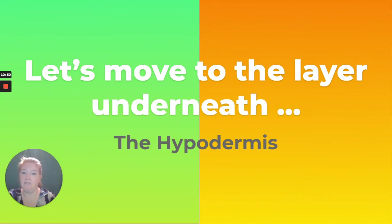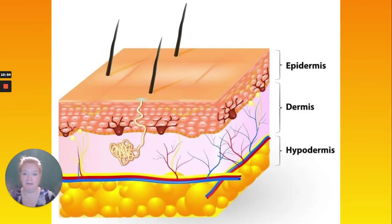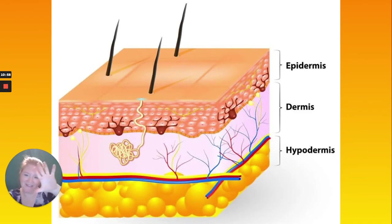Let's move to the layer underneath — the hypodermis — which doesn't have any extra layers. So: epidermis has five layers, dermis has two layers, hypodermis — that's it.